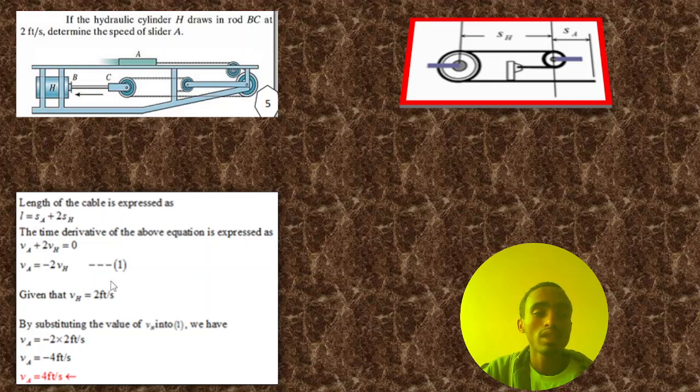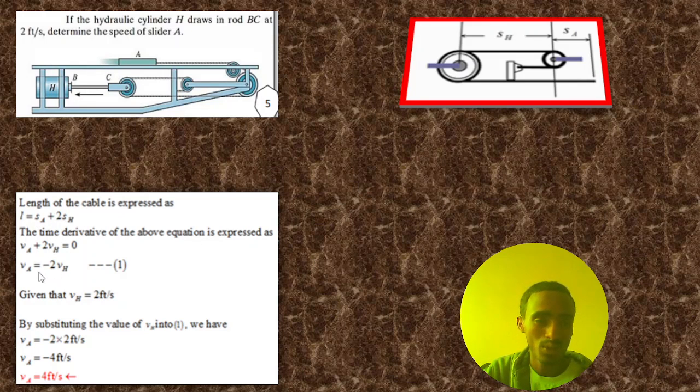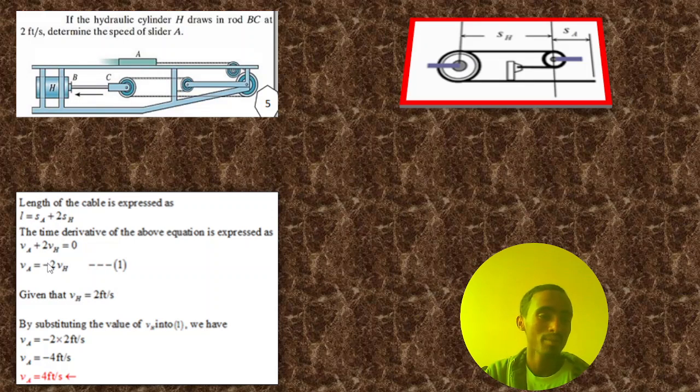But the total length of this cable is constant, so the derivative of L is zero. So va is equal to minus 2vh. By rearranging the equation and given that the velocity of H is given here, we can simply substitute the value. By substituting this value we get minus four feet per second.